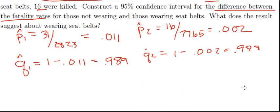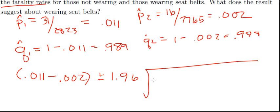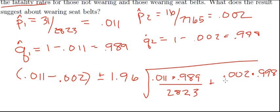And so I can calculate, I can use that formula to calculate the confidence interval. And so I'm going to take p-1-hat, so 0.011 minus p-2-hat, which was 0.002 plus or minus 1.96 times the square root of p-hat 1 times q-hat 1 divided by n1. So that's 2,823 plus the same thing for the second group. So 0.002 times 0.998 divided by n2, which is 7,765.